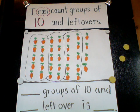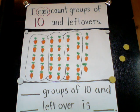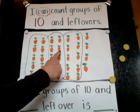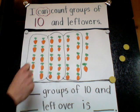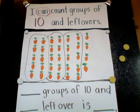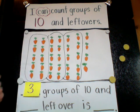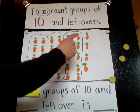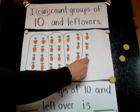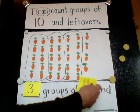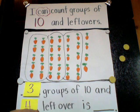So now we can count and see how many groups of ten we have. One, two, three groups of ten. I know I have three groups of ten, and I have one, two, three, four ones left over.